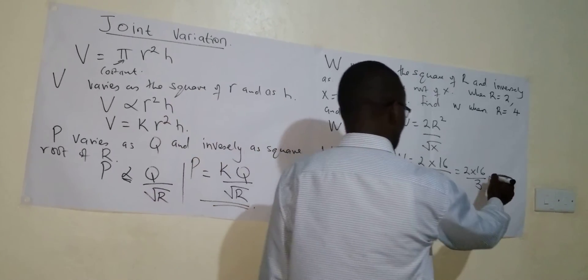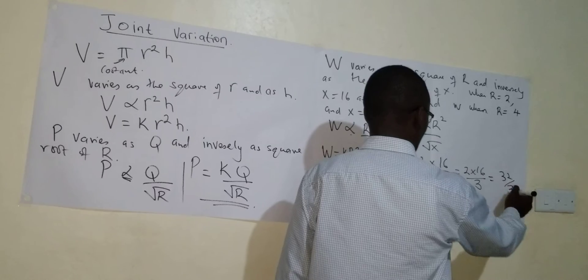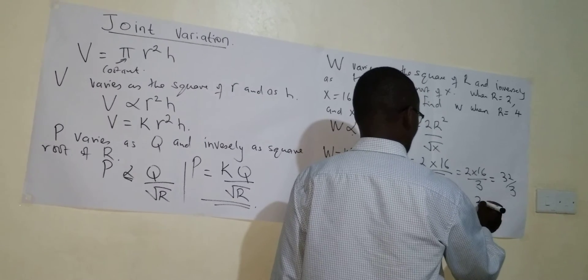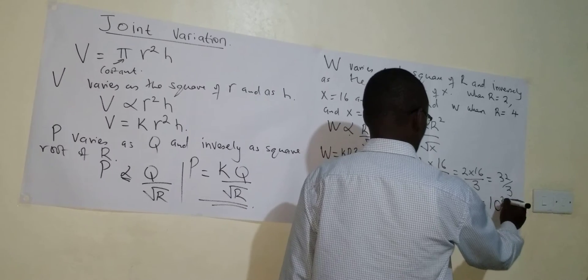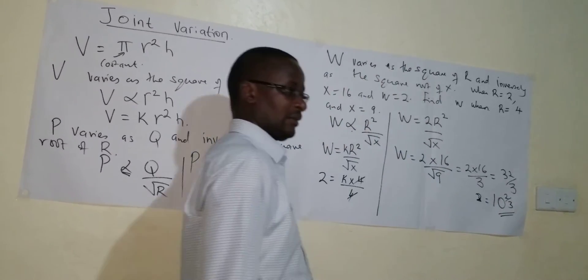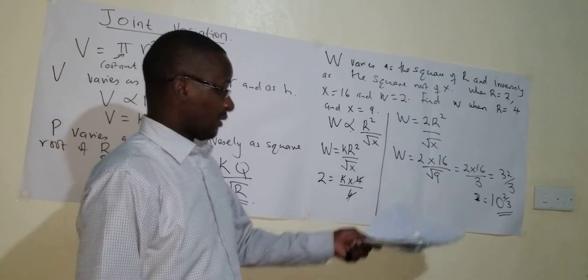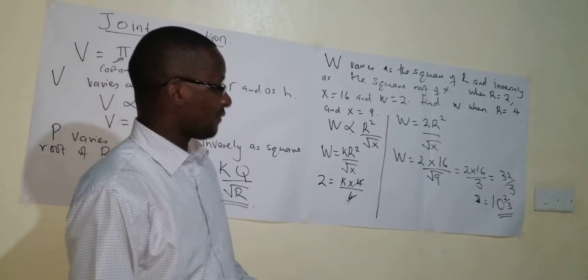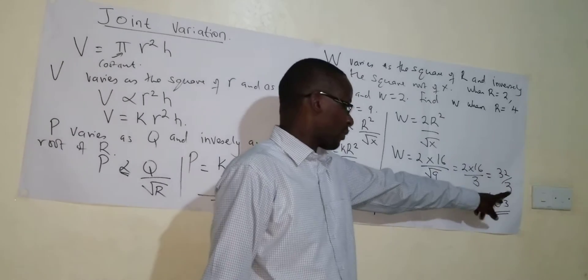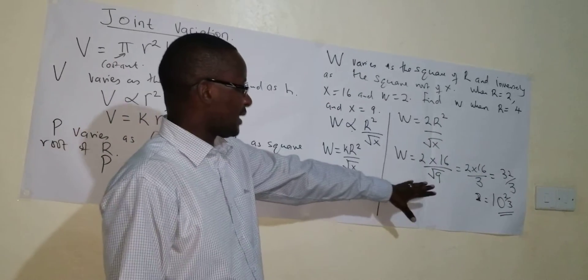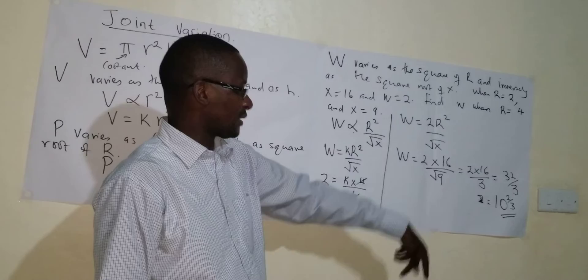So I have 2 times 16 over 3. So there I will get 32 over 3, which is actually the answer is 10 and 2 over 3. So that would be our W now, 10 and 2 over 3. You cannot leave an answer as a final answer in improper form.